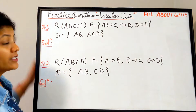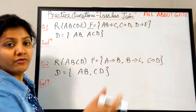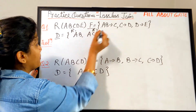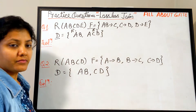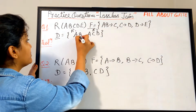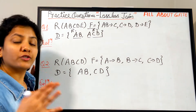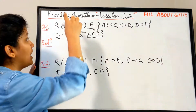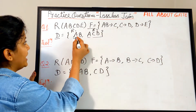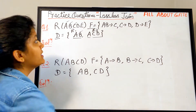The very first question: a relation R has five attributes A, B, C, D, E. There is a given FD set with three functional dependencies defined, and a decomposed set D where R1 = AB and R2 = ACD. We need to check whether this is a lossless join decomposition or not. The very first thing to check is attribute preservation — whether the decomposition contains all the attributes of relation R. Here we have A, B, C, D, but we don't have E.